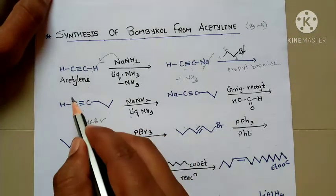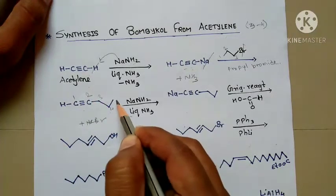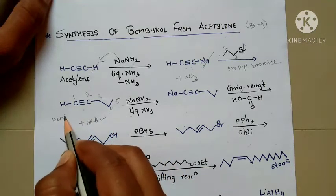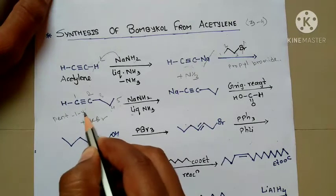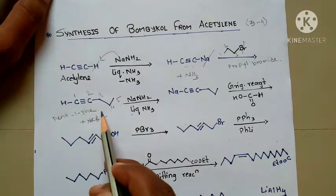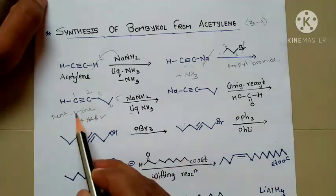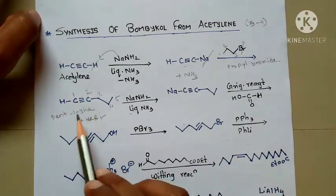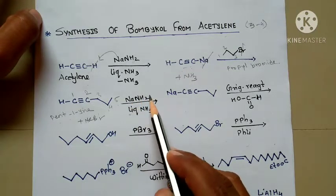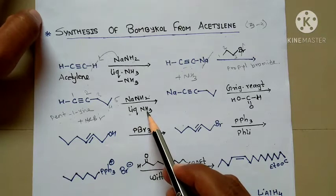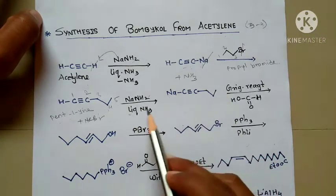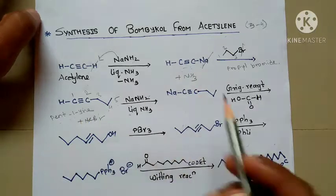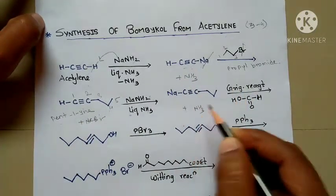What is the name of this molecule? Carbon 1, 2, 3, 4, 5 — five carbon atoms in the longest continuous chain, so it is 'pent'. The first position has a triple bond, so it is pent-1-yne — a triple bonded molecule, called an alkyne. Again, this pent-1-yne reacts with sodium amide or soda amide in the presence of liquid NH₃. Then you get the next molecule: sodium pent-1-ynide.